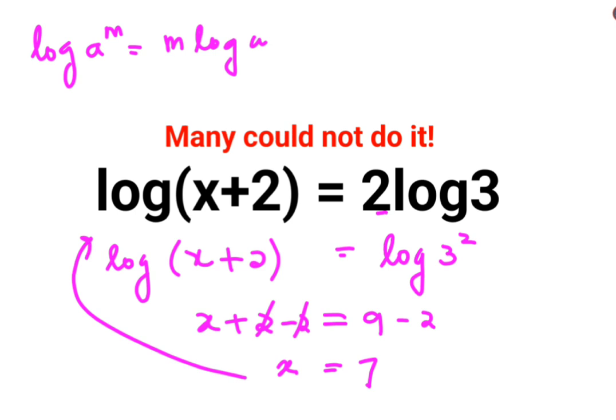Let's put this over here. So we have log of 7 plus 2. That gets you log of 9 and log 9 can be written as 3 square.